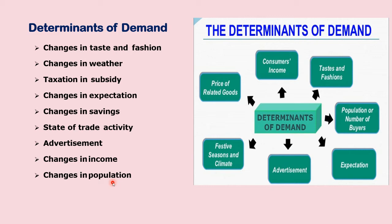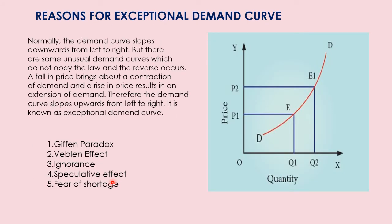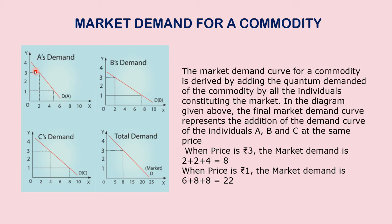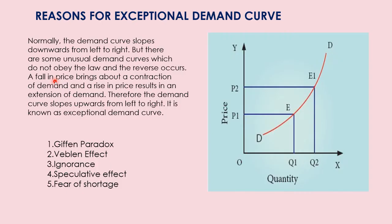Next, let us see the exceptions to the law of demand. So far I have been saying that the demand curve slopes downwards, but there is a graph which shows that the demand curve slopes upwards — this is called the exceptional demand curve. Normally the demand curve slopes downwards from left to right, but there are some unusual demand curves which do not obey the law, and the reverse occurs — upward instead of downward.